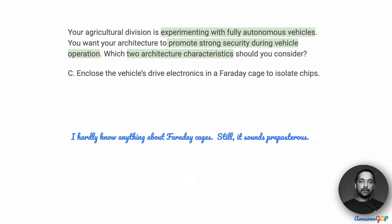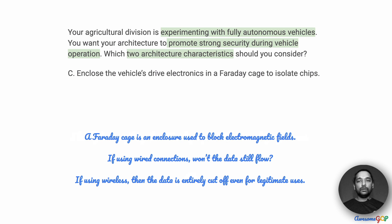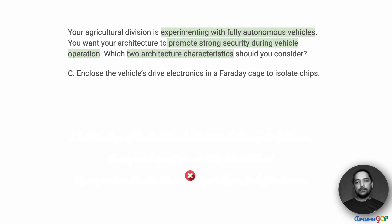Option C suggests enclosing the vehicle's drive electronics in a Faraday cage to isolate chips. A Faraday cage is an enclosure used to block electromagnetic fields. If the system had a wired connection, a Faraday cage wouldn't have much impact — it's like locking a building but leaving a wire running underneath directly to your data center. On the other hand, if using wireless, the data would be entirely cut off, even for legitimate users. Either way, this is an excessive and impractical option, so we eliminate option C.